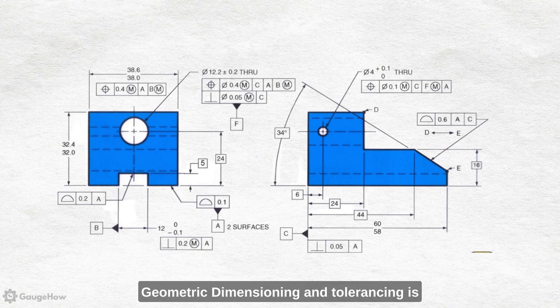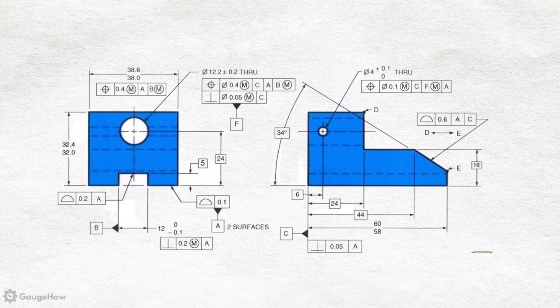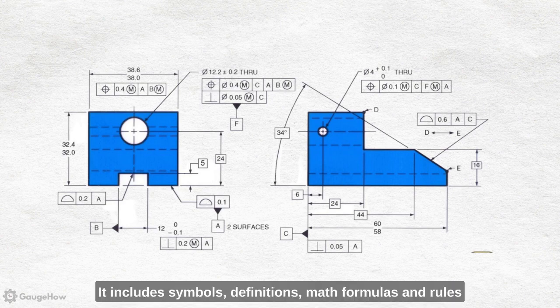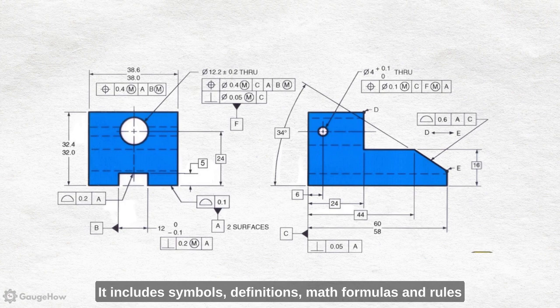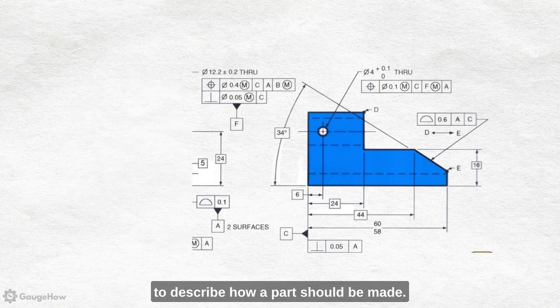Geometric dimensioning and tolerancing is a special language used in engineering to communicate design specifications. It includes symbols, definitions, math formulas and rules to describe how a part should be made.